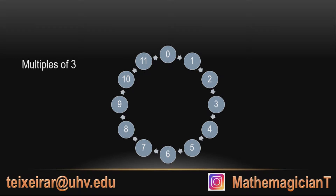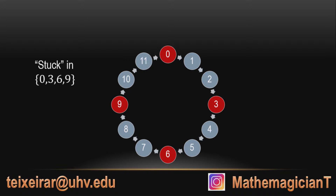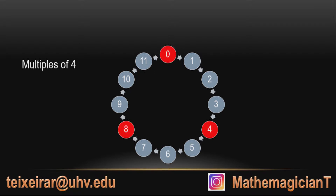What are the multiples of 3? Well, we start at 3. 3 plus 3 is 6. 6 plus 3 is 9. But 9 plus 3 is 12, which is equal to 0 modulus 12. And then you go back to 3. So if you start just adding 3, you're going to be stuck at 0, 3, 6, and 9. A similar thing happens with the multiples of 4 — you get stuck in 0, 4, and 8.